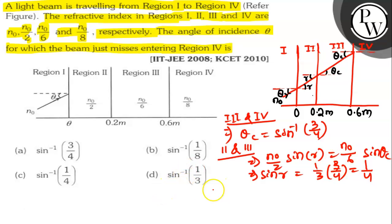For the interface of region 1 and 2, n0 sin θ is equal to n0 by 2 sin r.